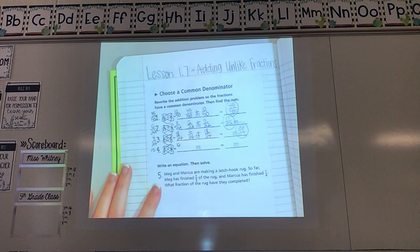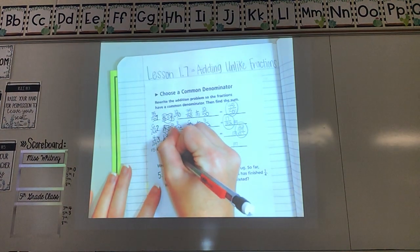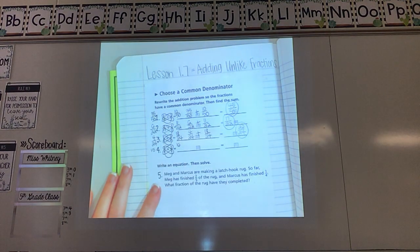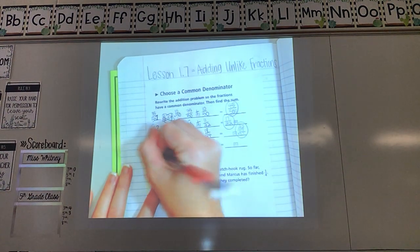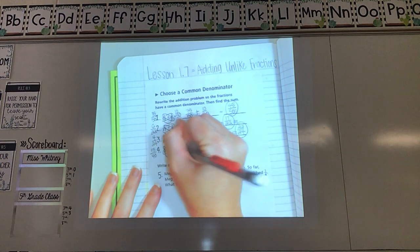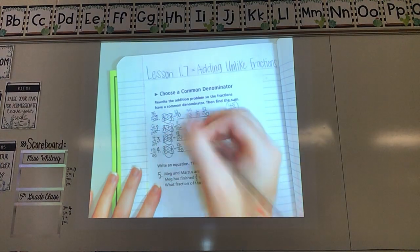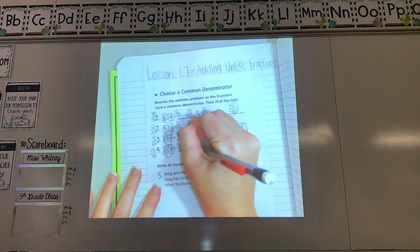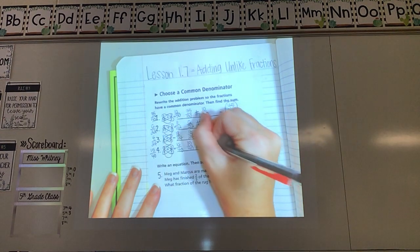After I have cross multiplied, what's my second step? Multiply the two numbers on the bottom. 8 times 5 is 40. So add a 40 underneath each one of these numbers. Copy down the new fractions that I have. 15 fortieths and 16 fortieths.